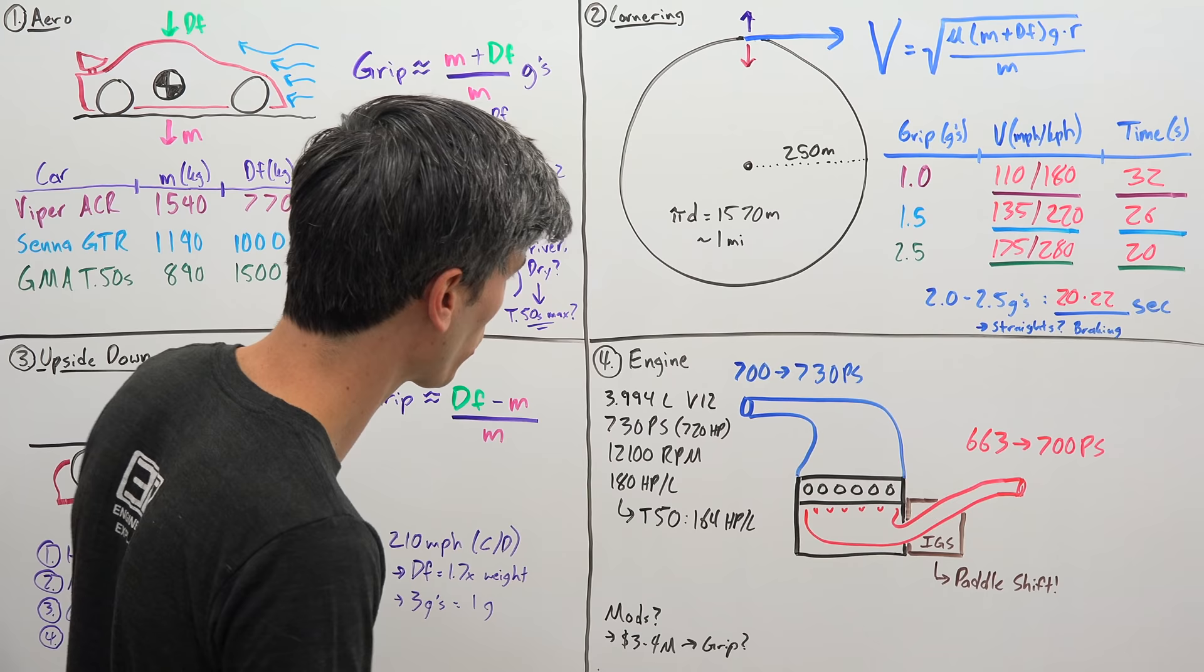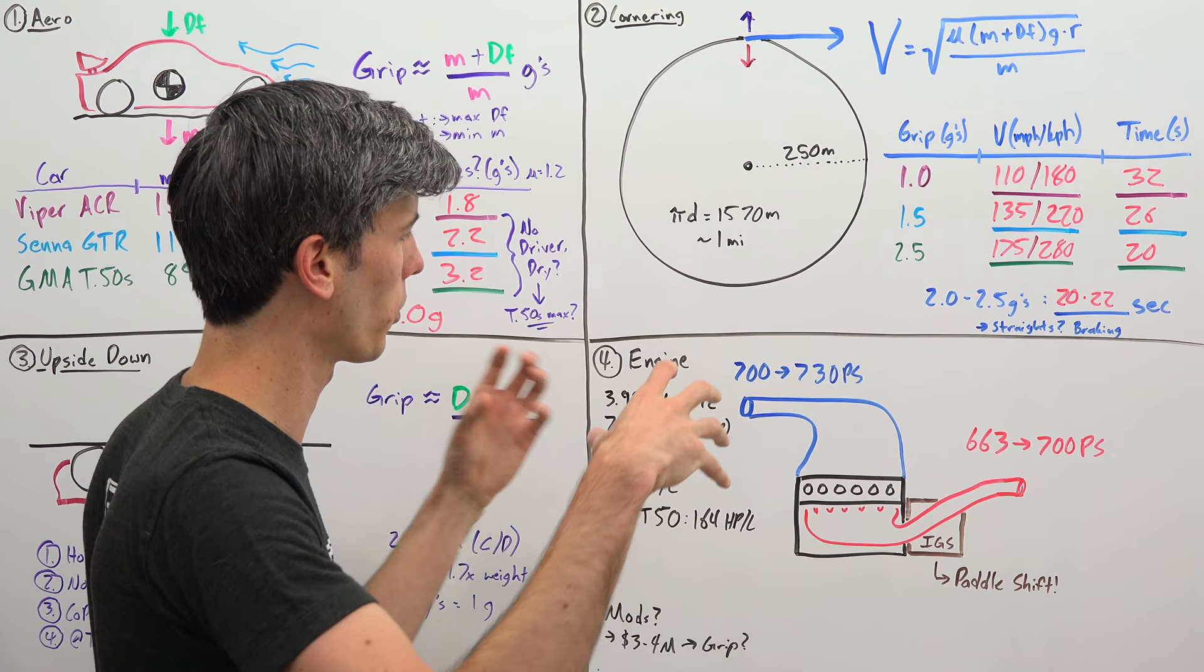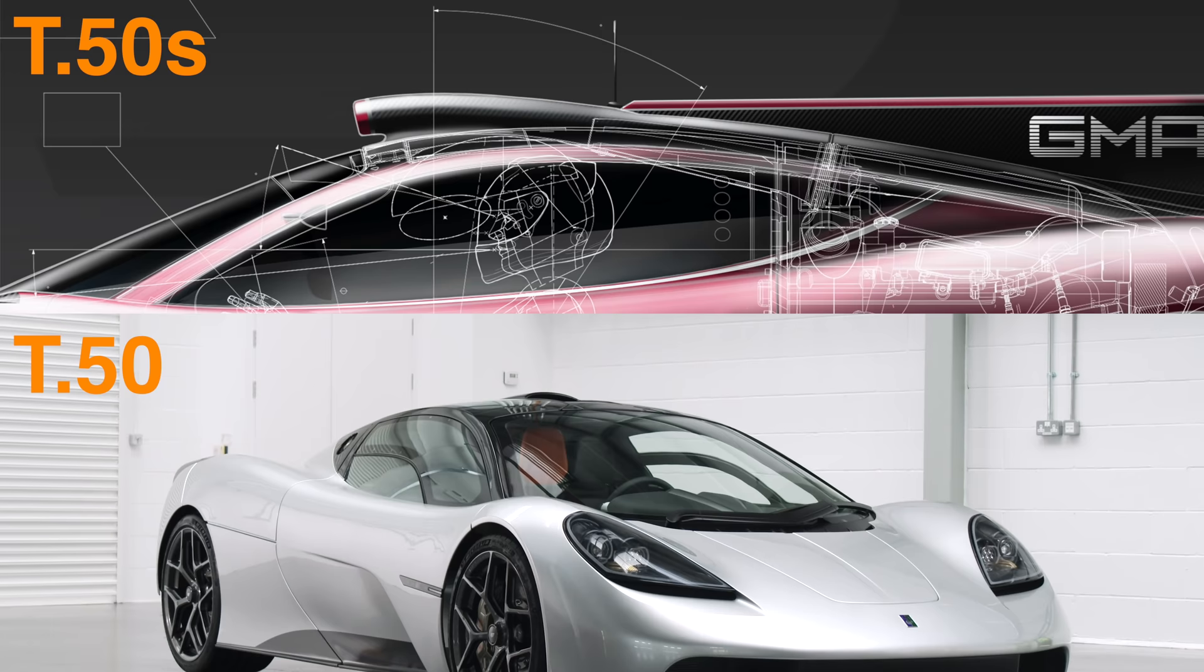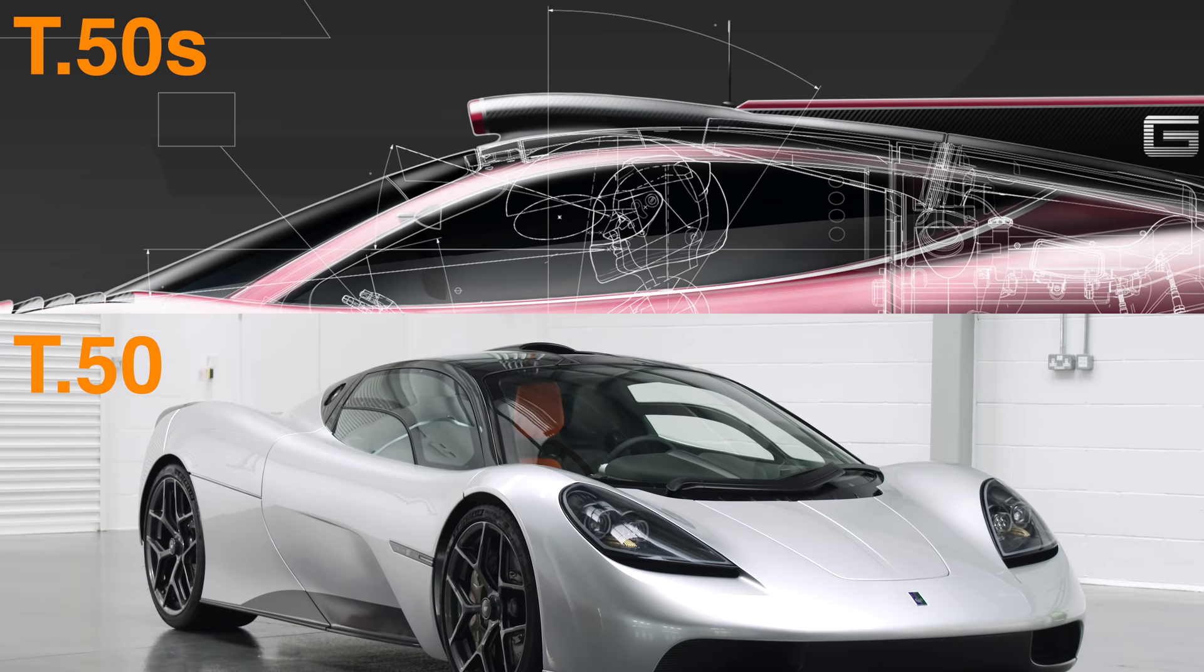And then that 700 gets bumped to 730 metric horsepower, the actual total output or about 720 horsepower. Because that roof scoop is elevated a bit out of the boundary layer from the car where that air is starting to move slower, it's up in the fresh air and able to use that ram air effect and get about an additional 30 metric horsepower.